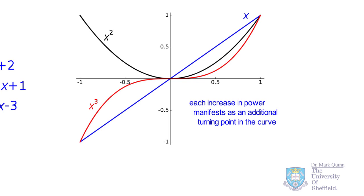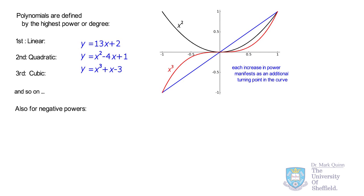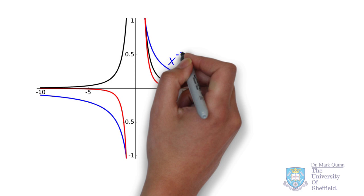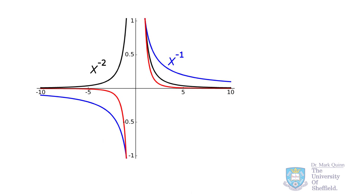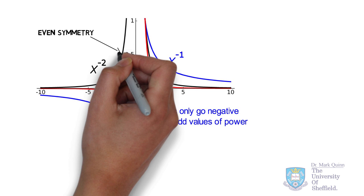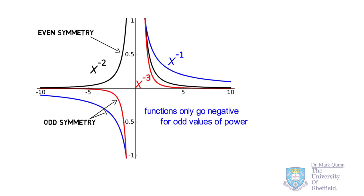Using negative powers is also possible in polynomials, and here we tend to see discontinuities occur as we approach x equal to 0. Even with negative powers, we can visualize the symmetries of these polynomials, similarly having even and odd features. For example, x to the power of minus 2 has even symmetry — a reflection through the y-axis — whereas x to the power of minus 1 or minus 3 has odd symmetry, a reflection through the origin.